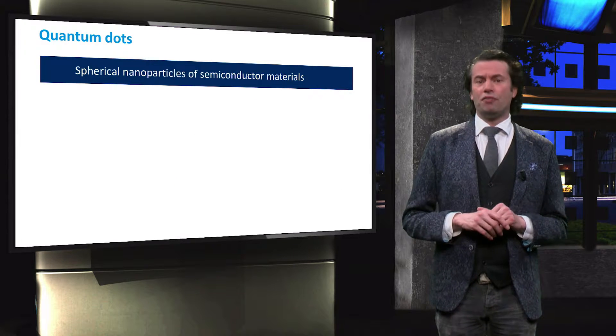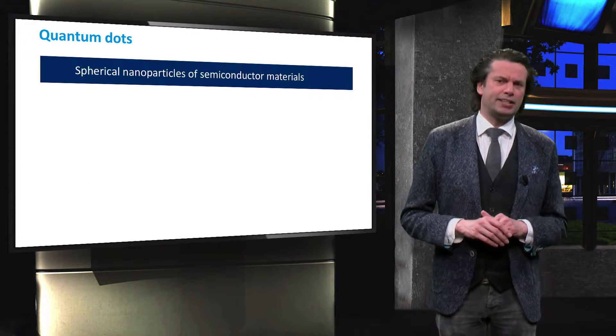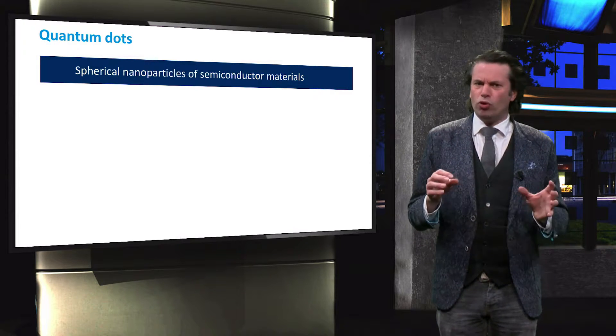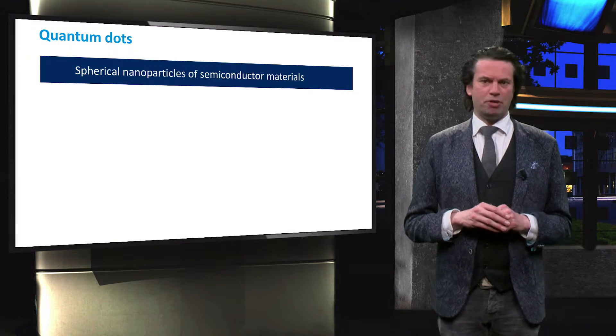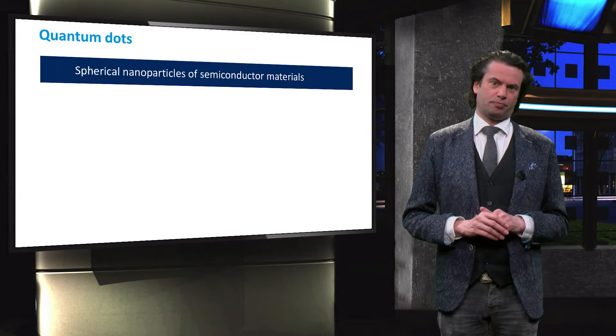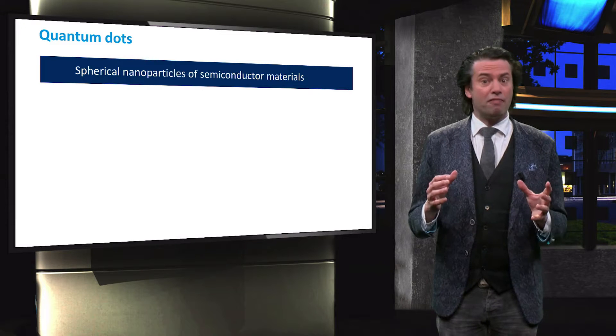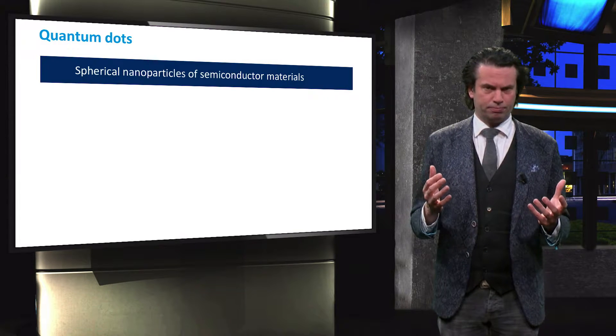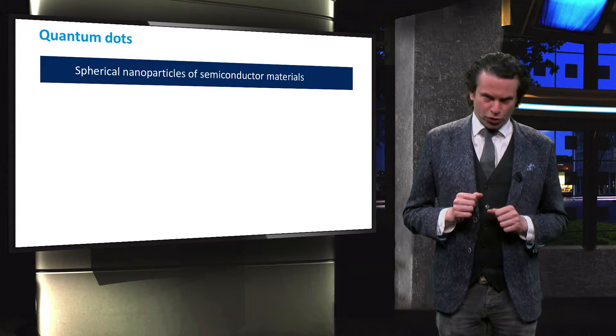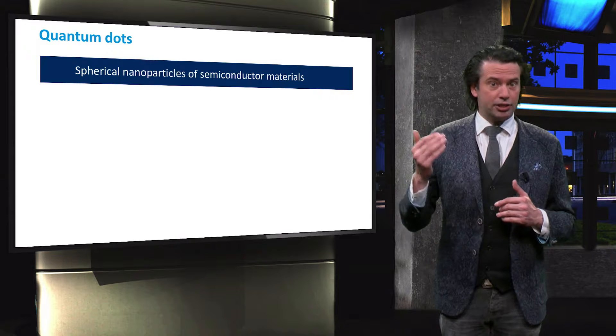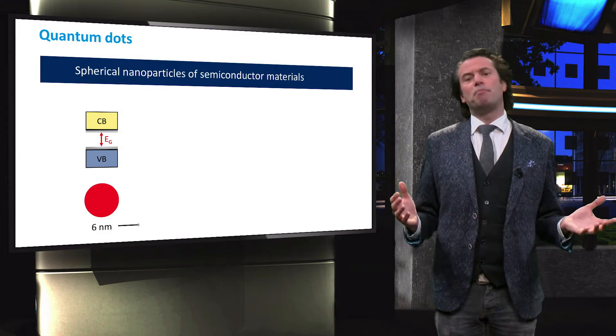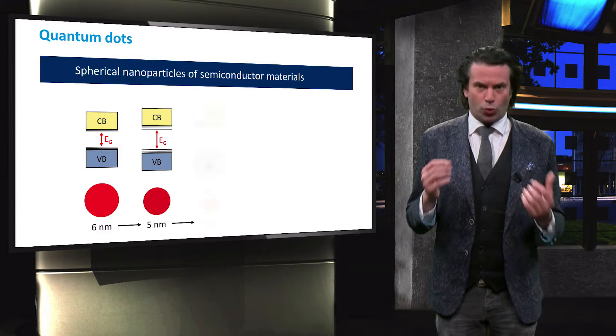One possibility that is under investigation for realizing intermediate band states is to use so-called quantum dots. These are small spherical nanoparticles made of semiconductor materials with typical diameters of only a few nanometers. These semiconductor particles still behave like a semiconductor material. However, due to the so-called quantum confinement, the bandgap of the semiconductor quantum dots can be larger than that of the same semiconductor in a bulk configuration.